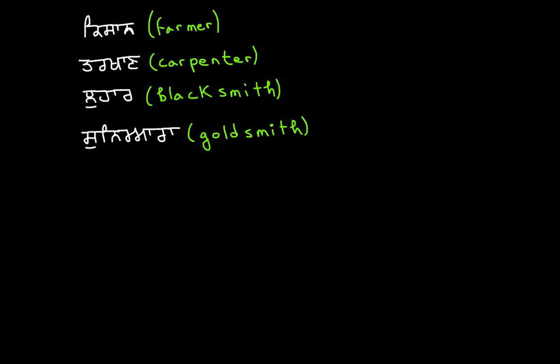Then we want to talk about a washerman. In India, there are people who basically do your laundry for you manually. Those individuals would be called Tobii. It's a Tata with a Hora, we have a Baba which has a Bihari — Tobii. This would be one of those people — washermen.